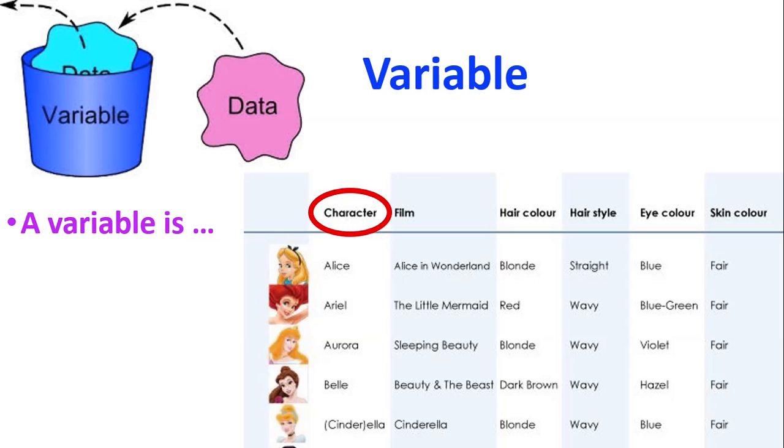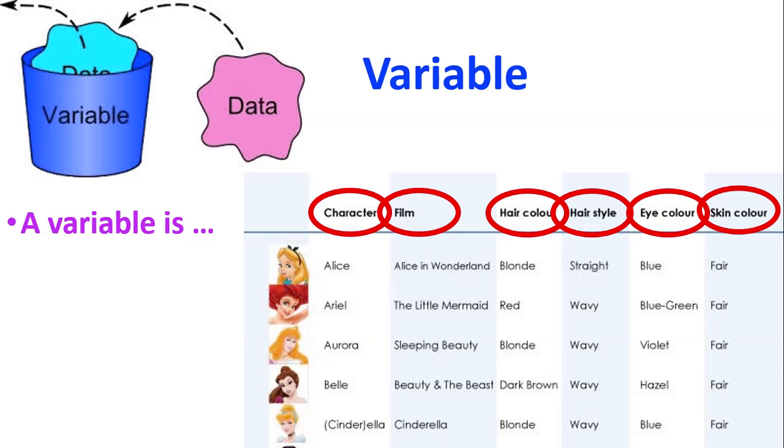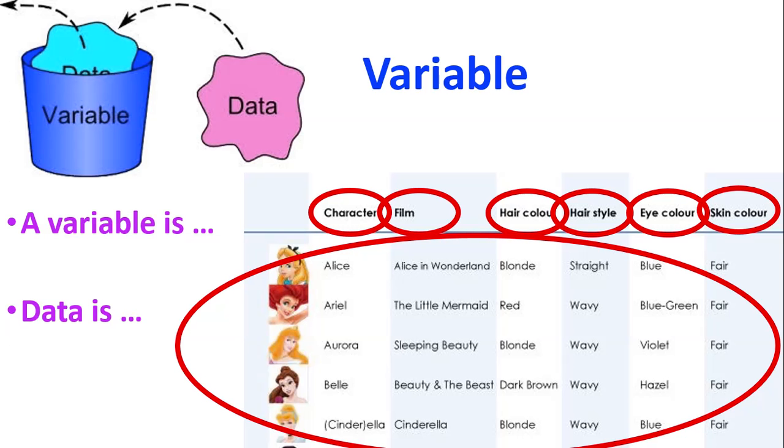For example, under characters, the character is the variable. The data would be the names of the character like Alice and Ariel and Aurora and Belle and so on. We've got another variable there. Film. So what film they're from. What hair color, hairstyle, eye color, skin color. Those are all different variables. Whereas the data is actually the values themselves. What each person tells us or the information we get from every person or every object.